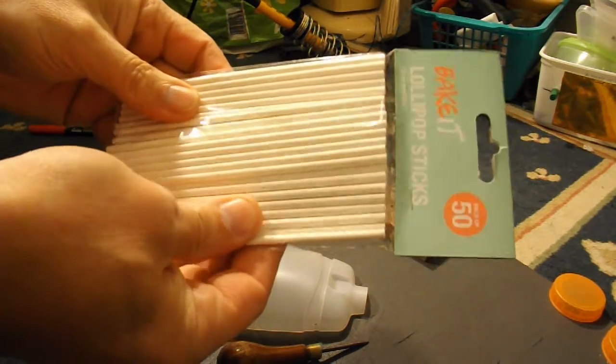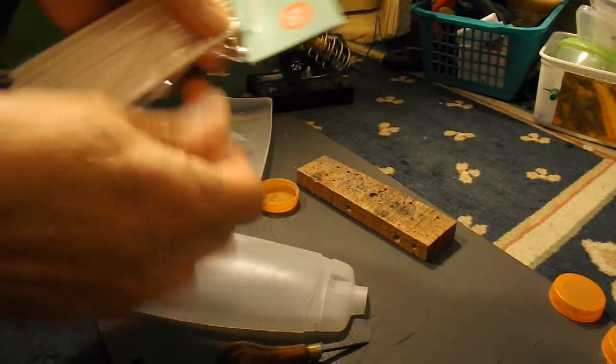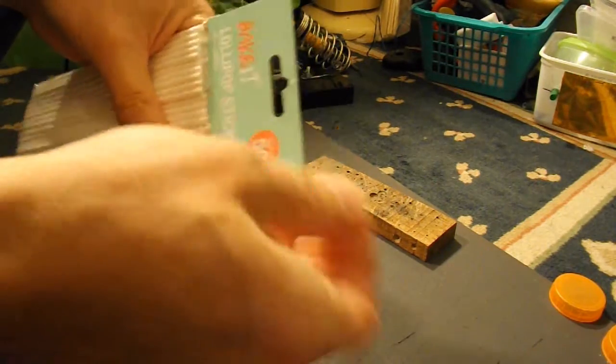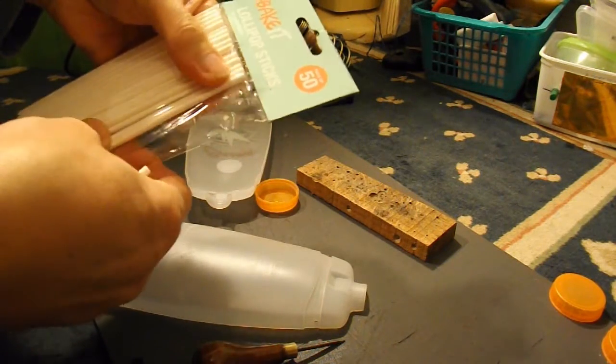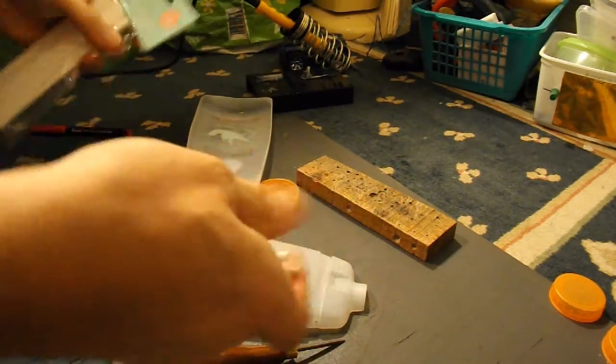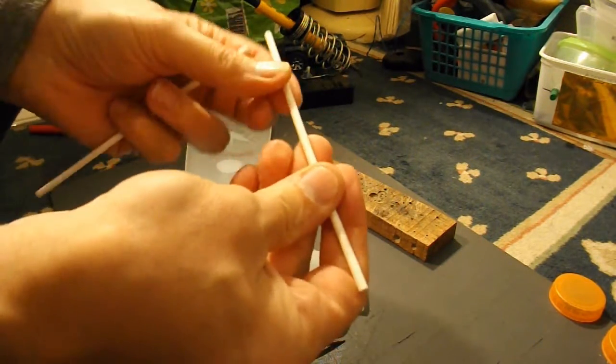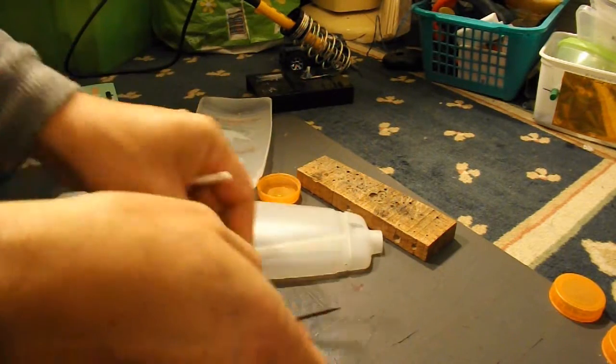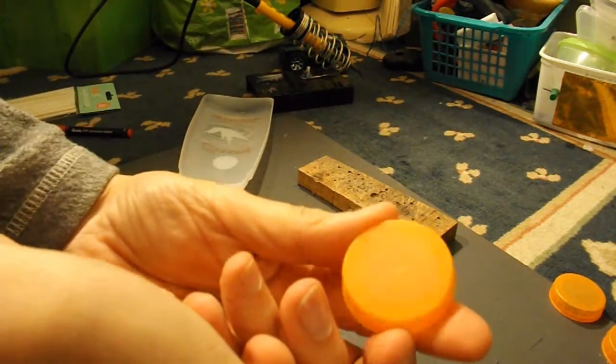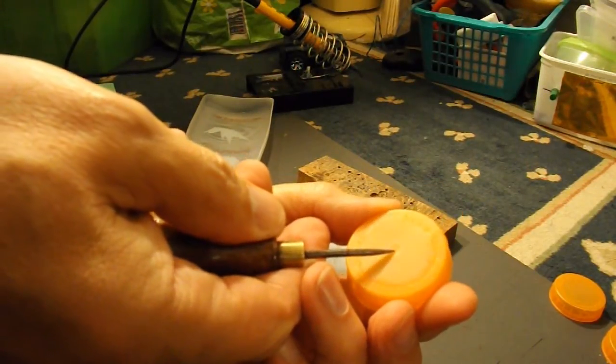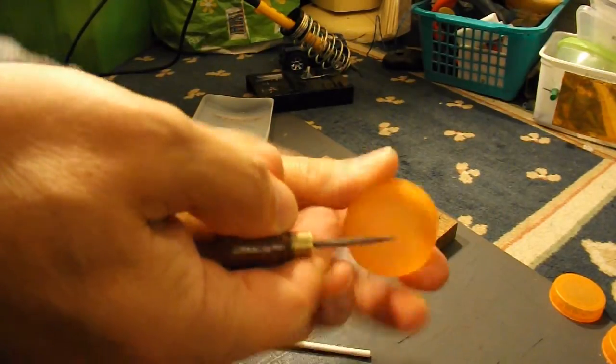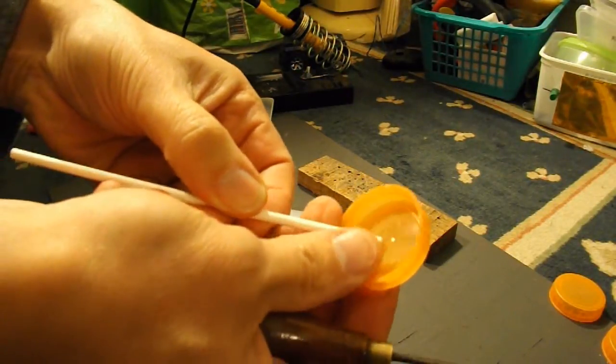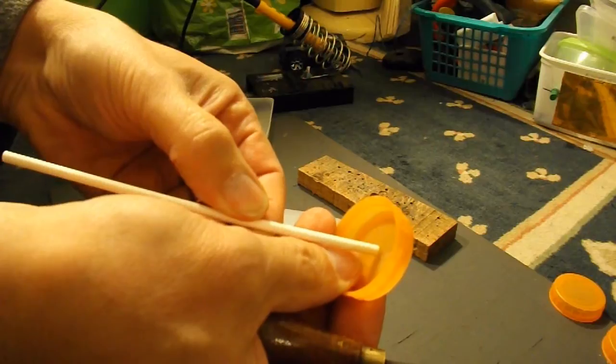While we're doing that we can have a look at these lollipop sticks. I bought these a long time ago intending to use them for car axles. I forgot about them. They're reasonably stiff and they look like they're some sort of plastic. These bottle tops have actually got a little mark right in the middle. So that'll be handy for getting the position right. And again we need to make the hole there the right size for these to go through. They need to be a tight fit because it needs to grip.